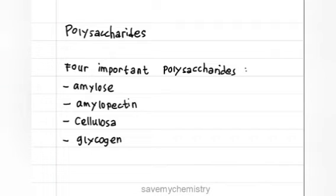Polysaccharides. A polysaccharide is a polymer of many monosaccharides joined together. Four important polysaccharides are amylose, amylopectin, cellulose, and glycogen. They are all polymers of D-glucose that differ only in the type of glycosidic bonds and the amount of branching in the molecule.